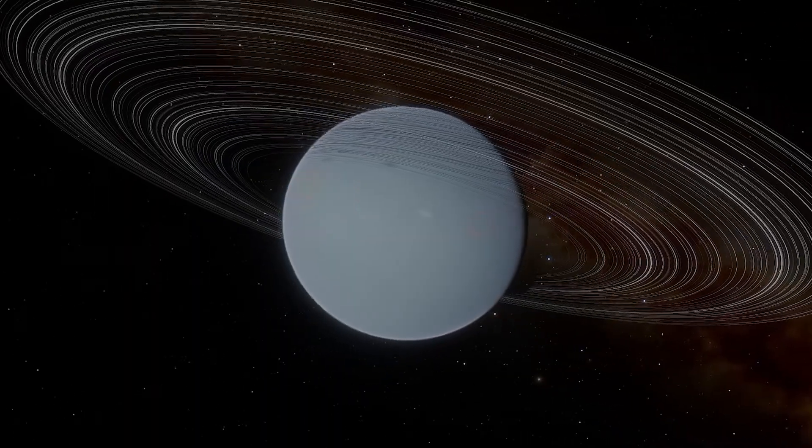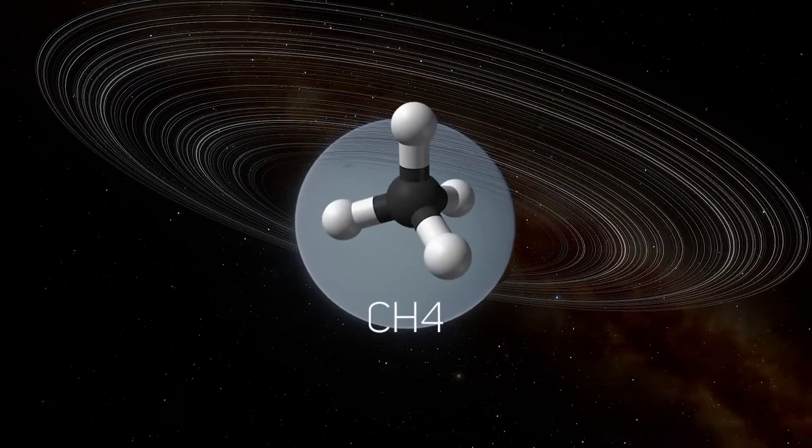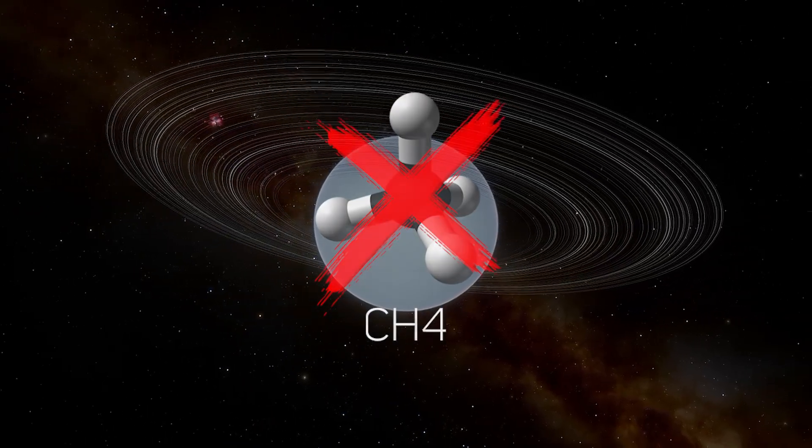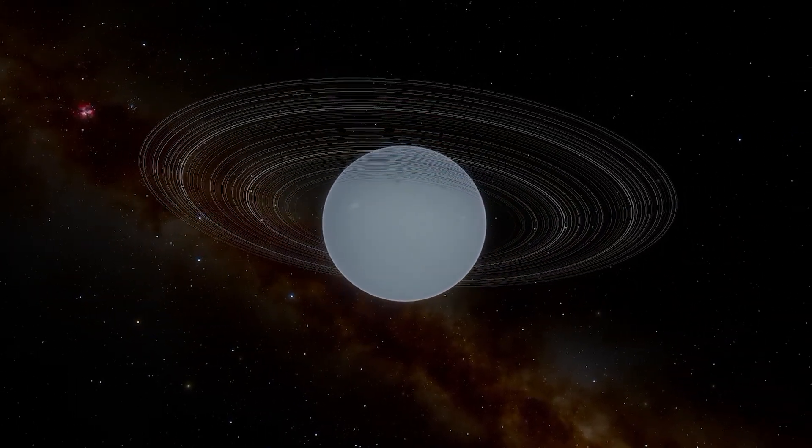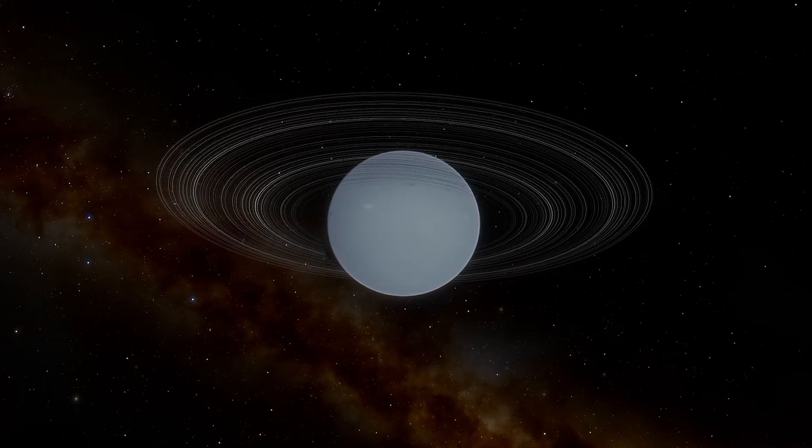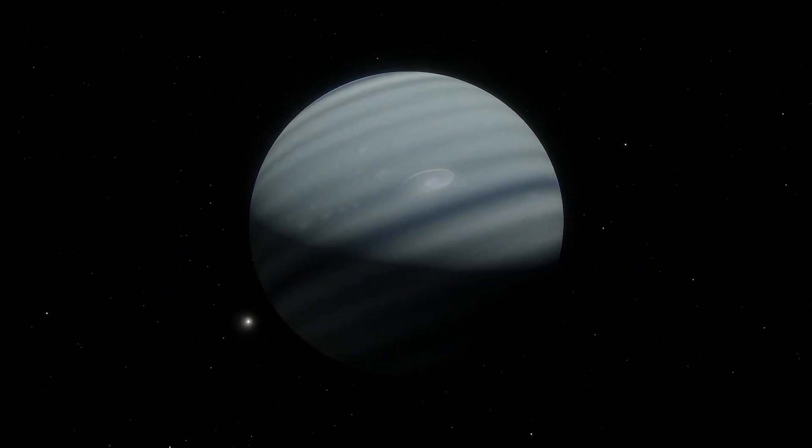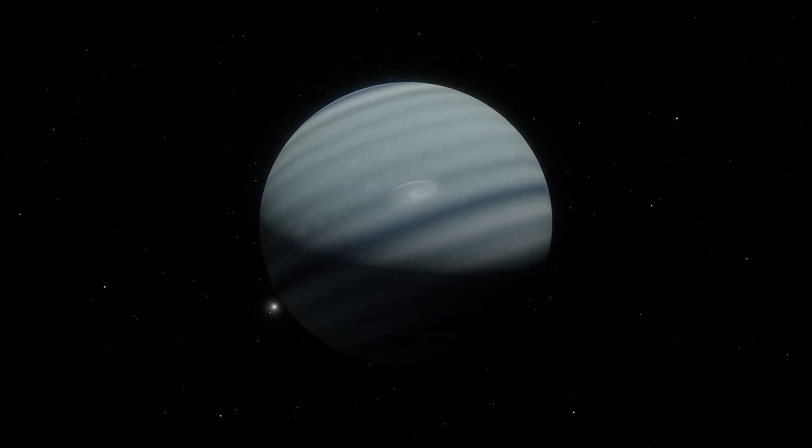Due to hydrogen depletion, the expected methane in the atmosphere cannot form, because there is not enough hydrogen left for the carbon to combine with. Hence, carbon combines with oxygen instead, forming carbon monoxide and carbon dioxide. Due to the atmospheric composition, helium planets are expected to be white or grey in appearance.